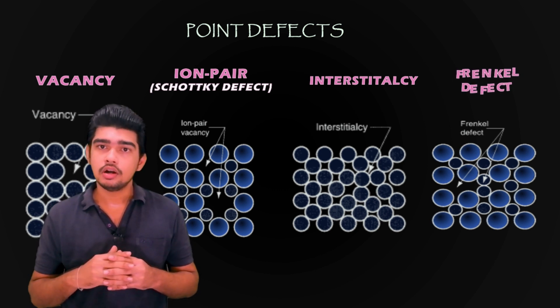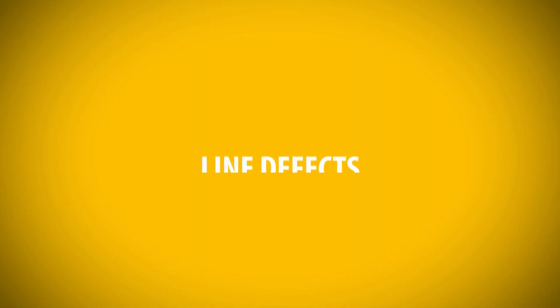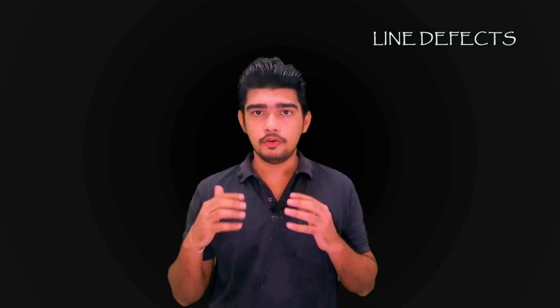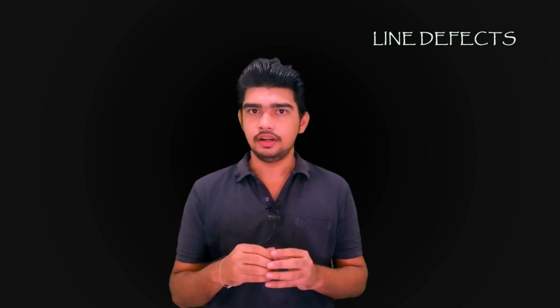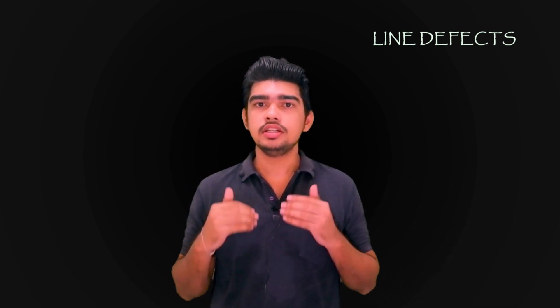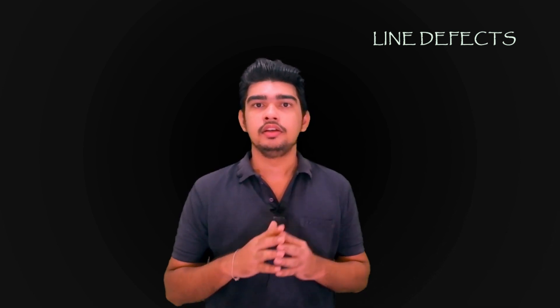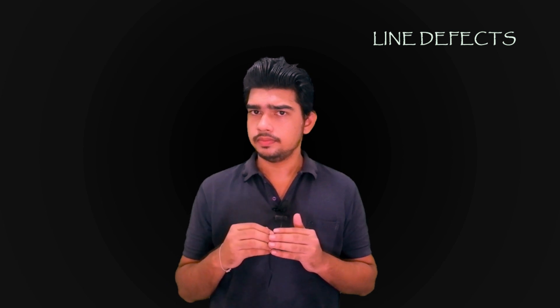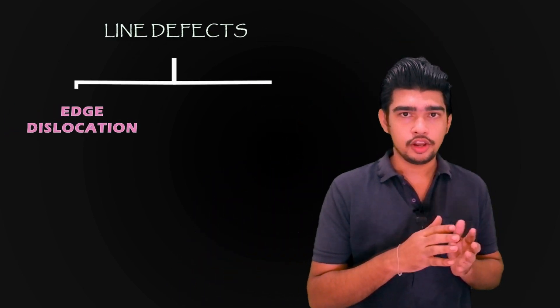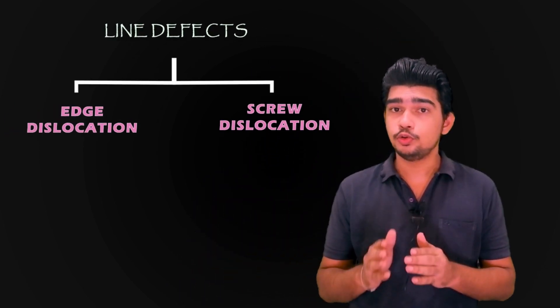Next, let us see about line defects. A line defect is a connected group of point defects, that is a collection of point defects that forms a line in the lattice structure. The most important line defect is the dislocation defect which can take two forms. One is edge dislocation, the other one is screw dislocation.